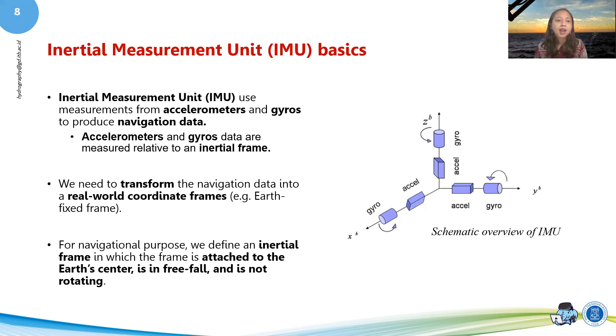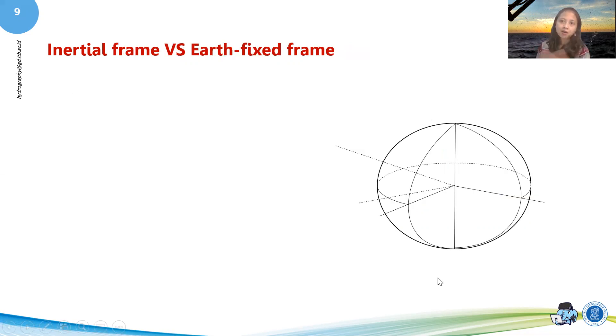And for navigational purposes, we can define an inertial frame in which the frame is attached to the Earth's center and is in freefall. Freefall means that the only force that is governing that body is the gravitational force, which is vertically down and is not rotating. So we can see this physically in our ellipsoidal model. So this is our Earth in ellipsoid. So we will try to see what is an inertial frame and Earth-fixed frame in this ellipsoidal.